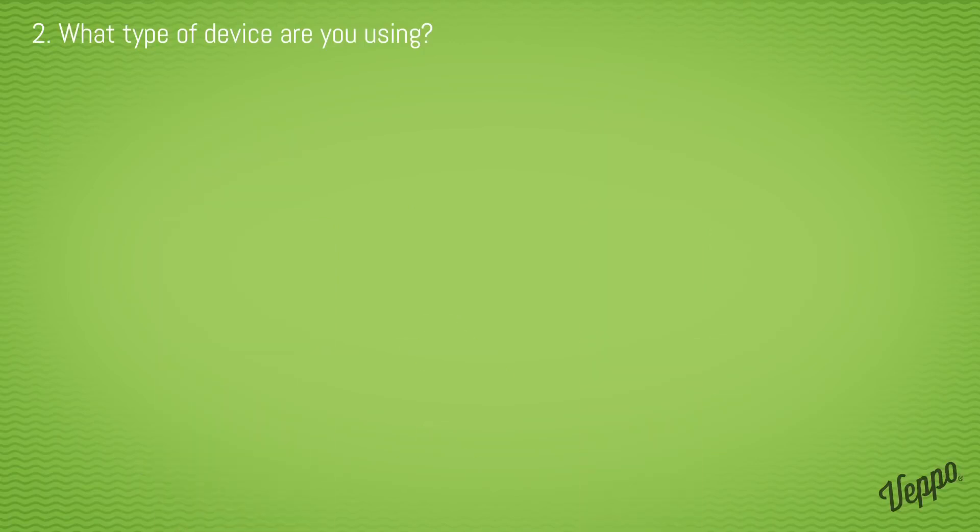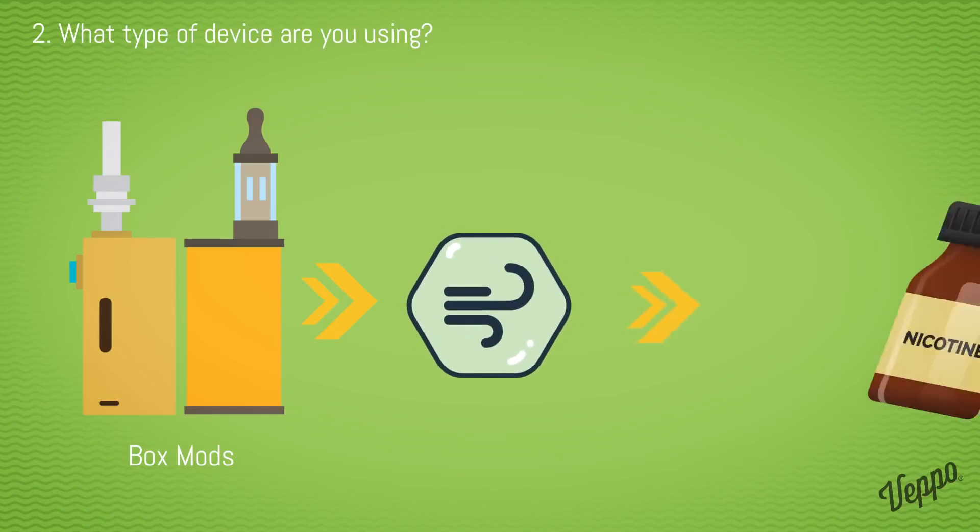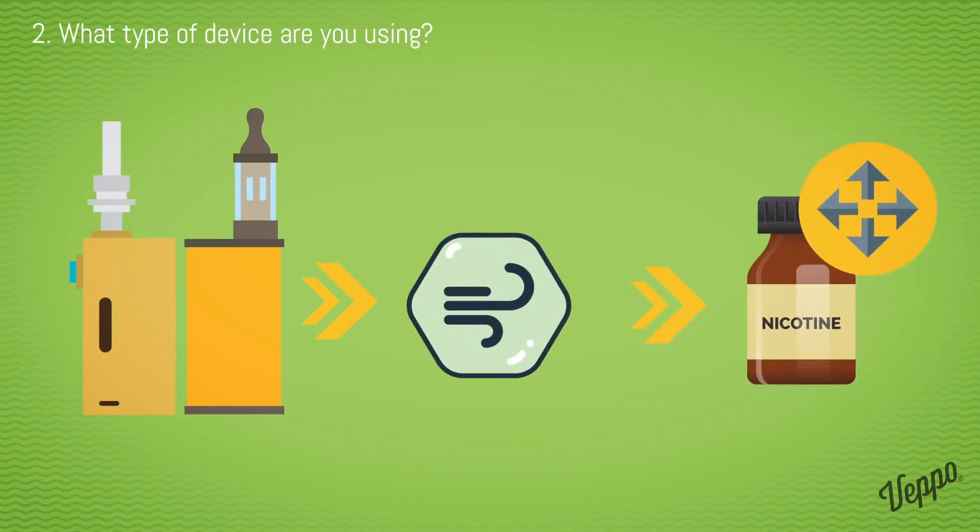For the most powerful and variable devices, those that are 20 plus watts such as box mods, it's best to just start at 3 milligrams. Since powerful devices such as box mods output so much more vapor, they better disperse the nicotine. This allows you to use less nicotine than tobacco products.